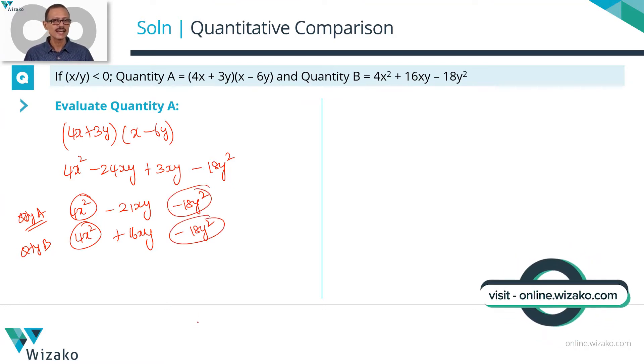So 4x² and -18y² are not going to influence the final outcome. They're going to play no role in comparing these two quantities because they're present on both sides. Let's ignore them.